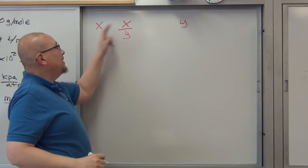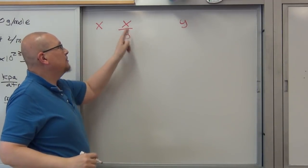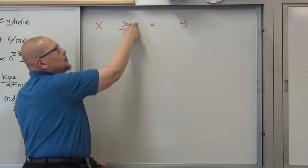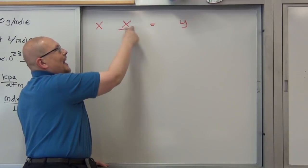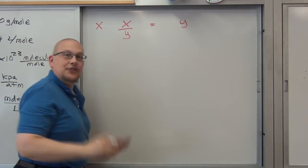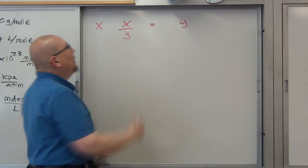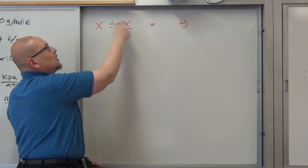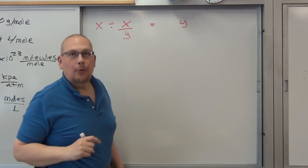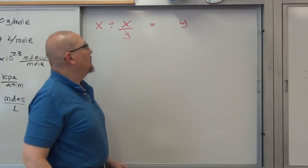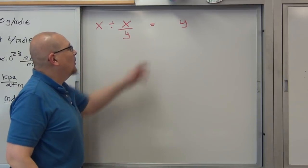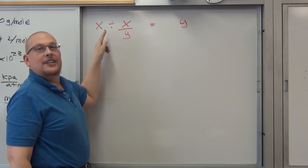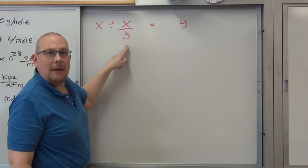How do we get rid of x and be left with y? If you multiply, you'll get x squared, so you can't do that. But if you divide, x will cancel and leave you with y. So if what you're trying to solve for is in the denominator, divide. Divide for the denominator.